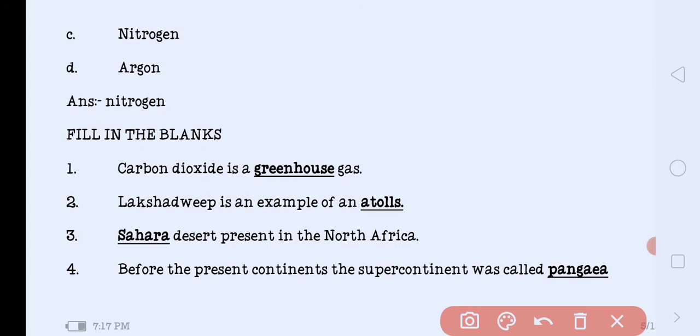Next our fill in the blanks. Carbon dioxide is a greenhouse gas. Lakshadweep is an example of an atoll. The Lakshadweep island is an example of atolls.